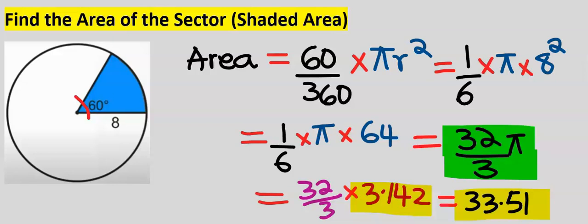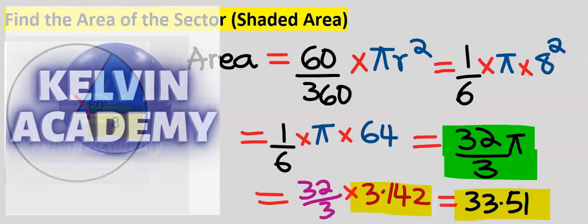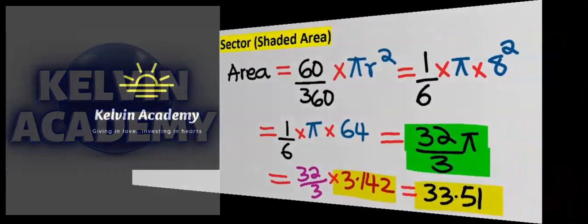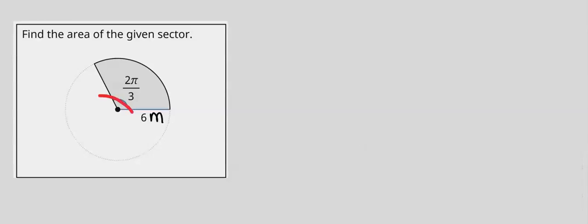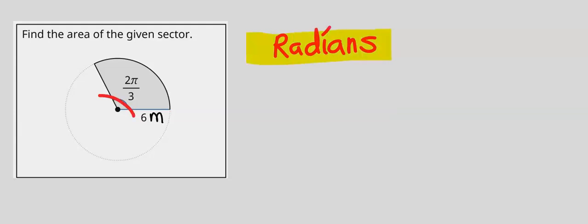The next step is to consider the unit. Area is usually centimeter squared, meter squared, or inch squared, but here the radius has no unit, so our area has no unit as well. Next, find the area of the given sector. Step one: consider the angle at the center — here the angle is given in radians.